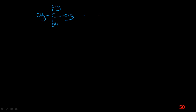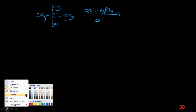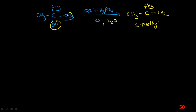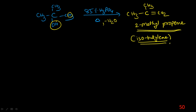Second example: tertiary butyl alcohol dehydrated with concentrated H2SO4 gives 2-methylpropene. The common name of 2-methylpropene is isobutylene. Remember: tertiary butyl alcohol → isobutylene.